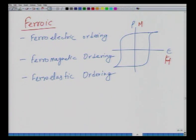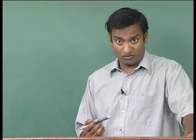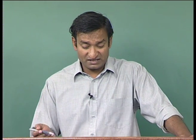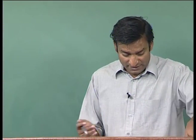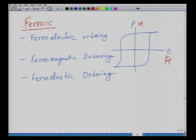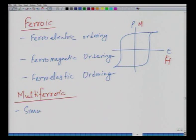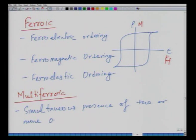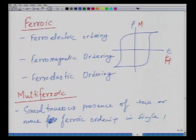A multiferroic material is one which has more than one of these ferroic orderings present simultaneously in a single phase. So a multiferroic material is defined by the simultaneous presence of two or more ferroic orderings in a single phase.